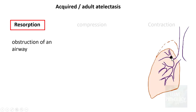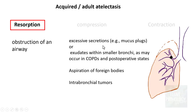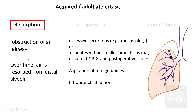Resorption atelectasis occurs due to obstruction in the airway — in the bronchus or any part of it. The obstruction can be caused by excessive secretions such as thick mucus plugs, or exudate within smaller bronchi as seen in chronic obstructive pulmonary disease and some post-operative states. It can also be due to aspiration of foreign bodies or intrabronchial tumors. Over time, air is resorbed from the distal alveoli and the lung gradually collapses — hence the name resorption atelectasis.